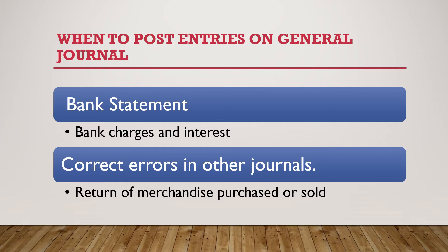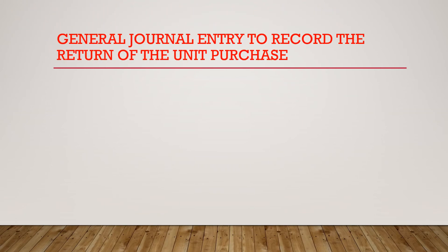There are a lot of things that you can record on general journals because they do not have specific journals. Let's see an example — general journal entries to record the return of a unit purchased. When you make a purchase, you are increasing your inventories, which means your assets have increased, so you will debit that account. Depending on whether you're paying cash or buying on account, it will determine which journal you prepare.